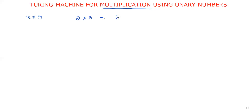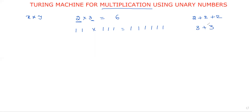Assume that two numbers are 2 into 3, that is equal to 6. How do we represent this in unary format? Two is represented with two ones, and three is represented with three ones, giving six ones. Remember, multiplication is repeated addition — two into three is written as two plus two plus two, that is two added three times. Either x into y or y into x, both are the same repeated addition.